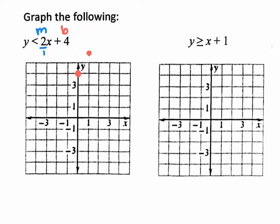Instead of continuing up 2 over 1, let's go backwards with the pattern — over 1, down 2, over 1, down 2 — putting dots all the way across. Then you ask yourself: is this a solid line or a dotted line? This is dotted because it does not have a solid line underneath the inequality. So we put some dashed lines between the dots.